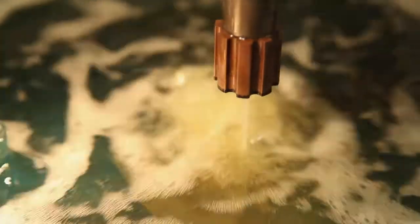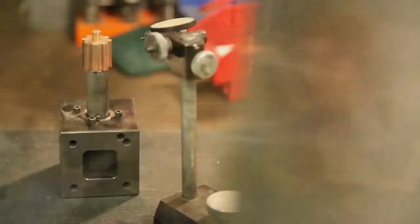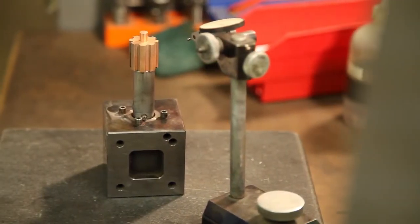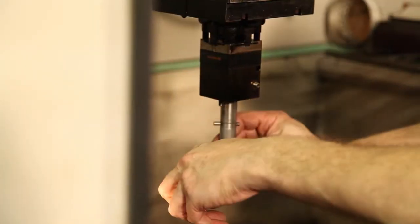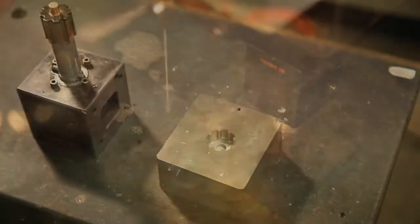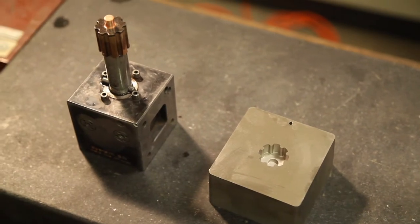For our sinker EDM service, we machine with advanced electrodes constructed from graphite, copper or copper tungsten. Our machine can operate on any conductive metal material up to 14 by 20 inches and 10 inches thick.